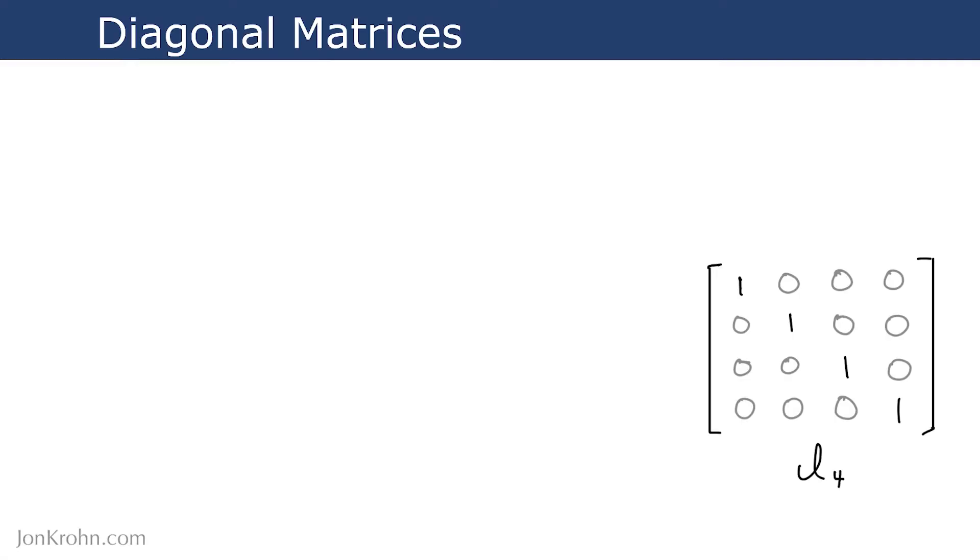This is a quick video on diagonal matrices, a special matrix class that is important in machine learning. A diagonal matrix is one that has non-zero elements along the main diagonal and zeros everywhere else.